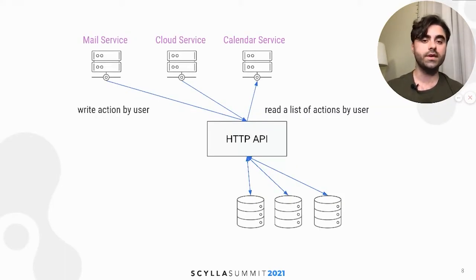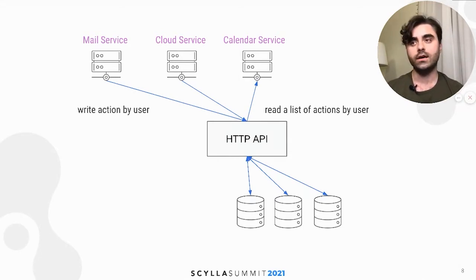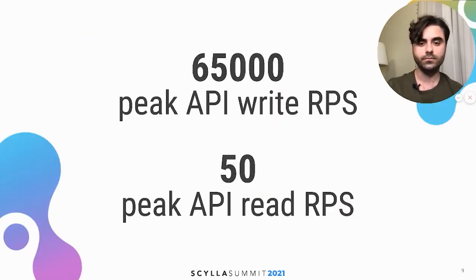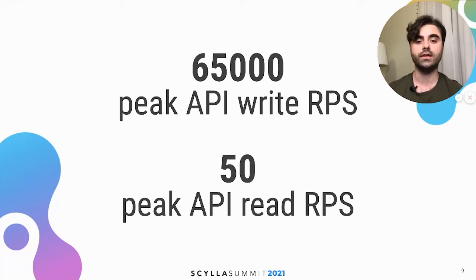There is an HTTP API which can serve both write and read requests. There are a bunch of clients like a mail service, cloud service, or calendar service, and these clients write actions by user into this API. On every write or read request, the API goes to the storage. This service handles 65,000 write requests per second at peak load and around 50 reads per second at peak load — so reads and writes differ by about 1,000 times.